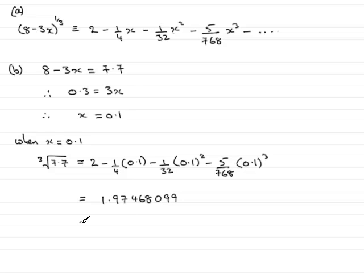And we're asked to give this to 7 decimal places. So that's going to be 1.9746810. Don't forget to put the 7 decimal places on the end. And that brings us now to the end of part B and the end of this question.